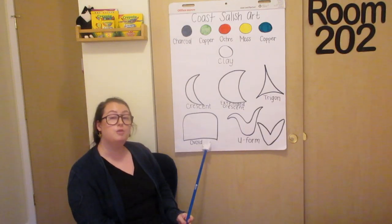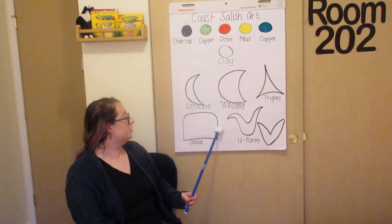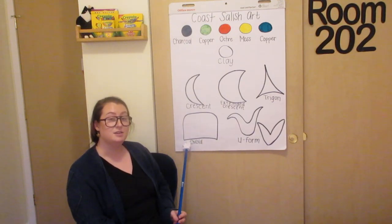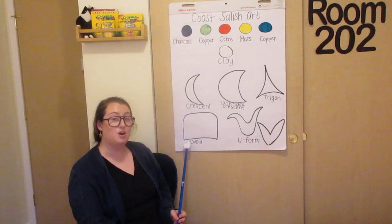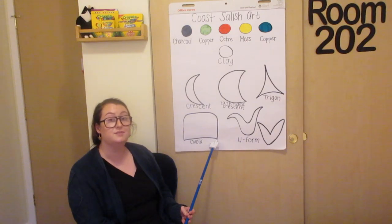And ovoid, which is almost like an oval, but one side is flat. So, an oval is all round, like a circle, but one side of an ovoid is flat.